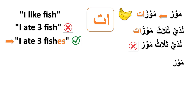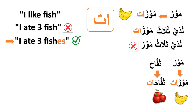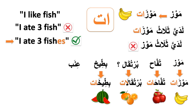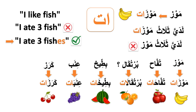So the plural form of موز is موزات, تفاح becomes تفاحات, برتقال becomes برتقالات, بطيخ becomes بطيخات, عنب becomes عنبات, كرز becomes كرزات, and finally ليمون becomes ليمونات.